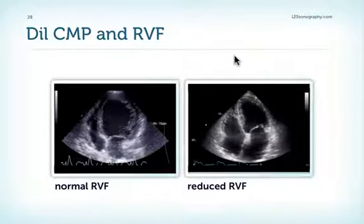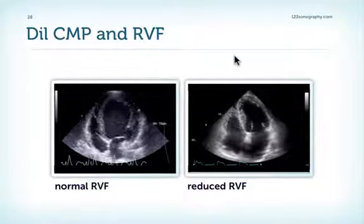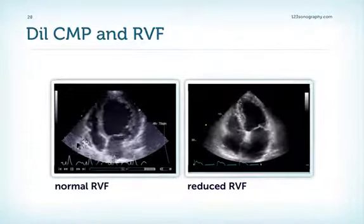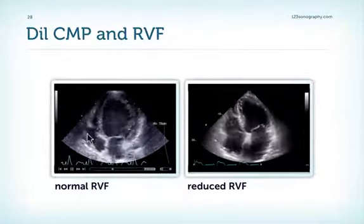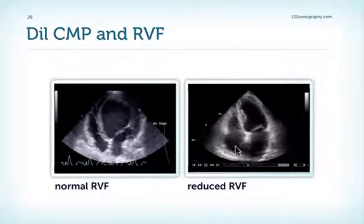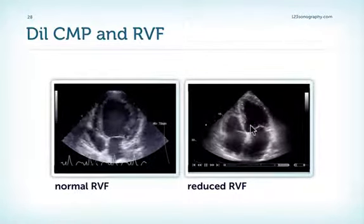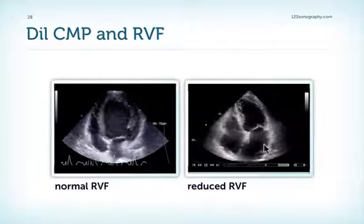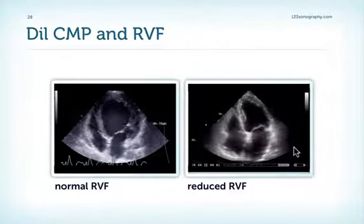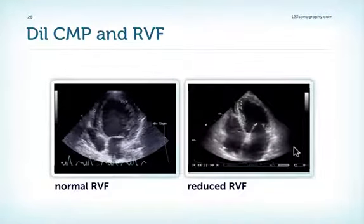Right ventricular function is also important. Actually, right ventricular function correlates better with prognosis and symptoms than left ventricular function. Here on the left you see a patient with a fairly small right ventricle which is almost hyperdynamic — this patient was doing fine. Here on the right is a patient with a dilated right ventricle with poor RV function who already had symptoms of right heart failure. So keep in mind: RV function is important for prognosis and for symptoms.